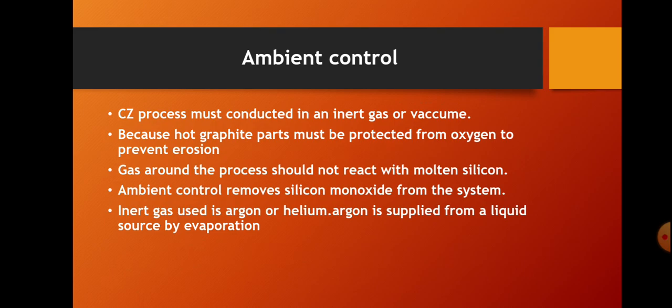When the seed crystal is pulled upwards, the molten silicon solidifies in the same crystalline structure as the seed. This process produces a new rod of silicon crystal from the molten silicon — called the silicon ingot — with a diameter in the range of 300 to 400 millimetres. That is all about the CZ crystal growth process. Thank you.